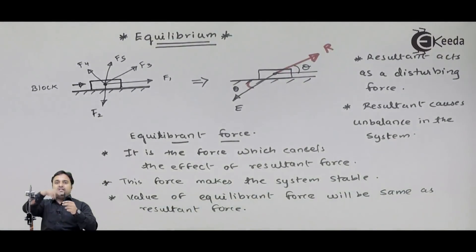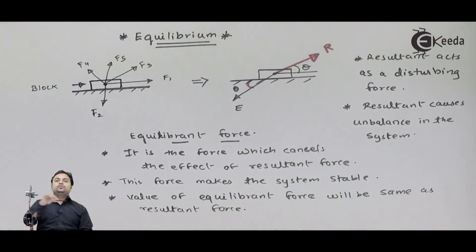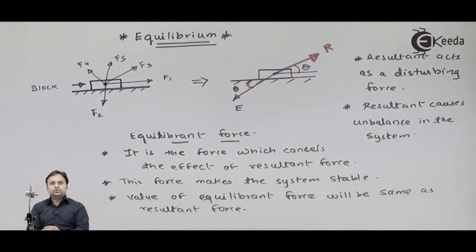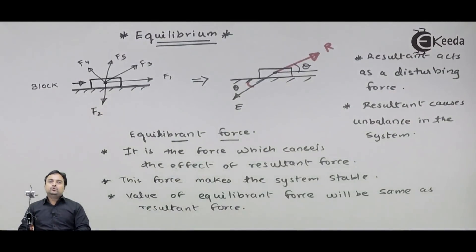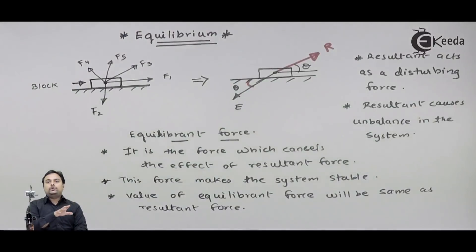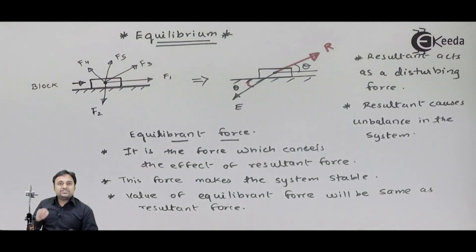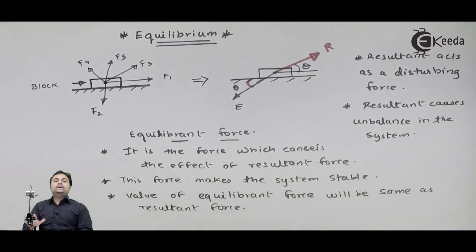If resultant force is acting upward, equilibrium force would be acting downward. If resultant is acting towards the right, equilibrium force would be acting towards the left. So both the forces oppose each other. But since they have the same value, they are going to cancel out each other. If equilibrium force is not present, then that system is disturbed because of the resultant. Resultant will try to move a stationary body, and if the body is already moving, resultant will try to stop it. So resultant acts as a disturbing force which changes the state of rest of a body. And if you want to maintain that state of rest, you require an equilibrium force.